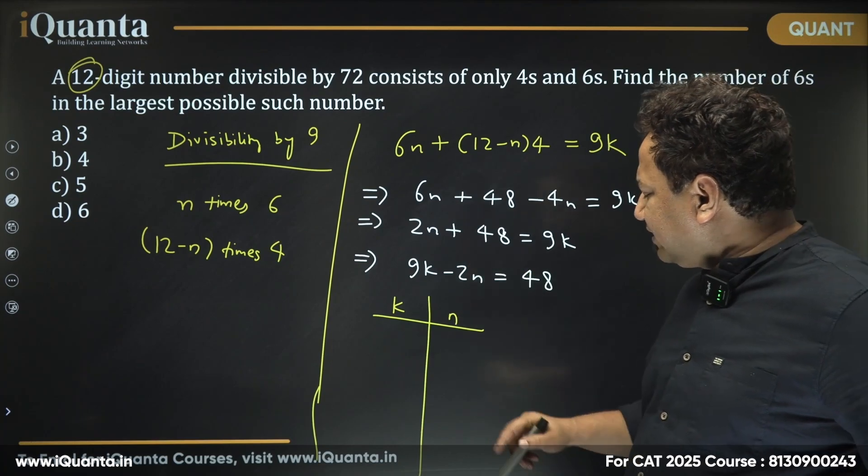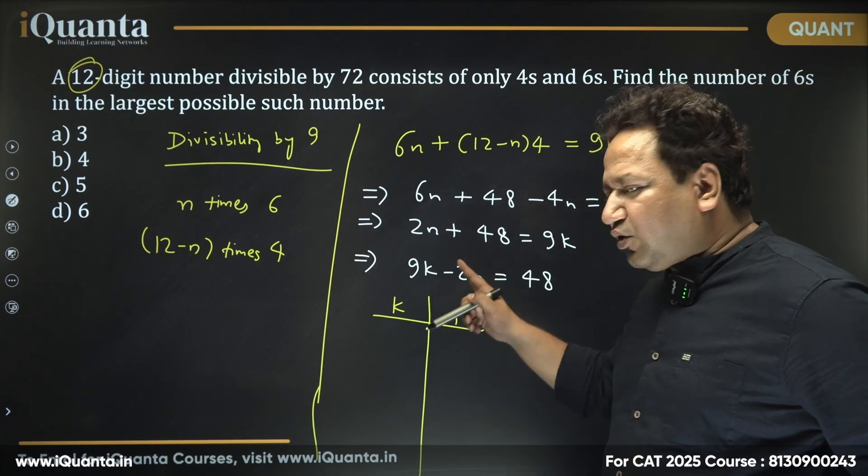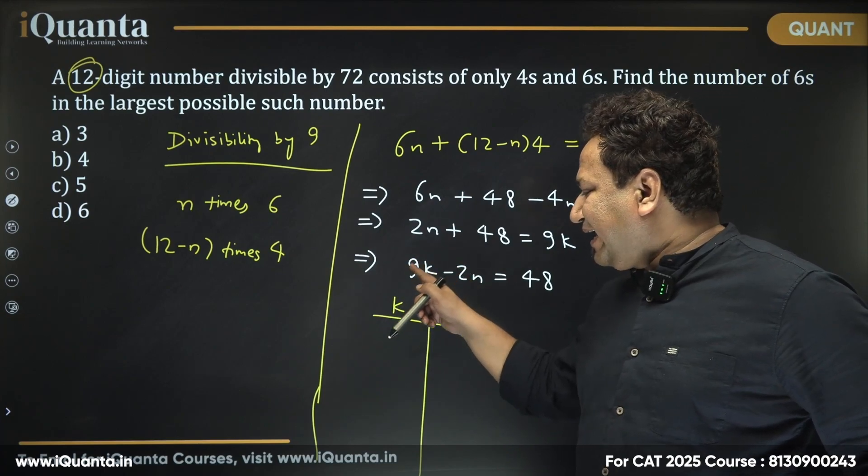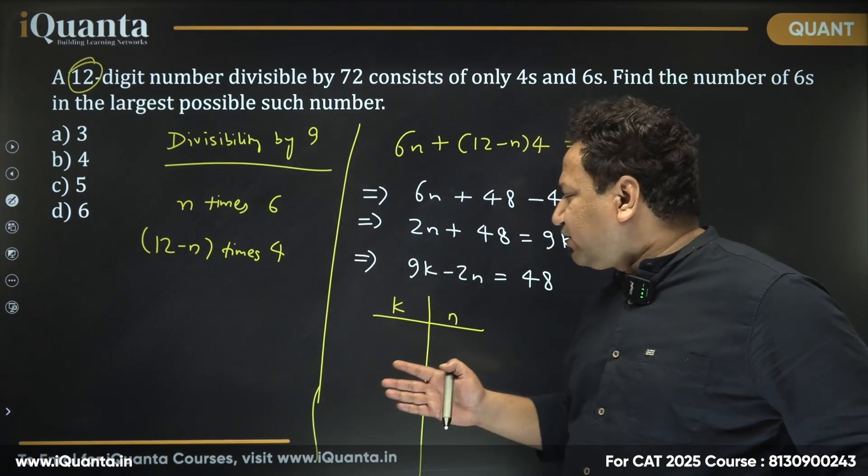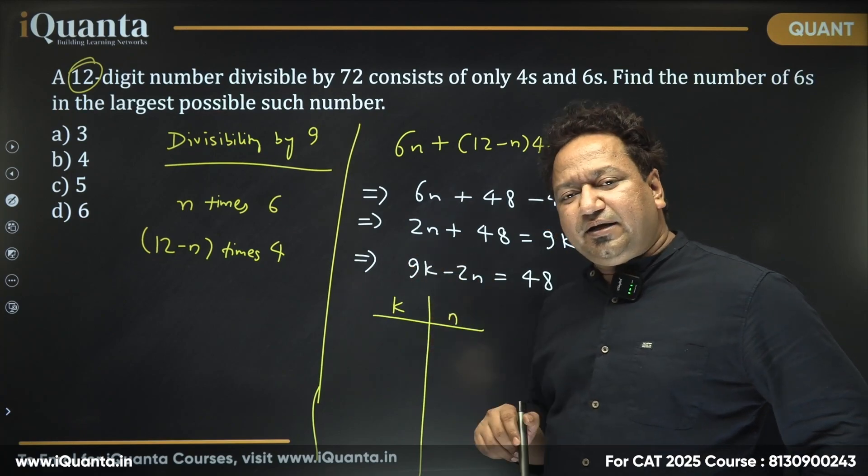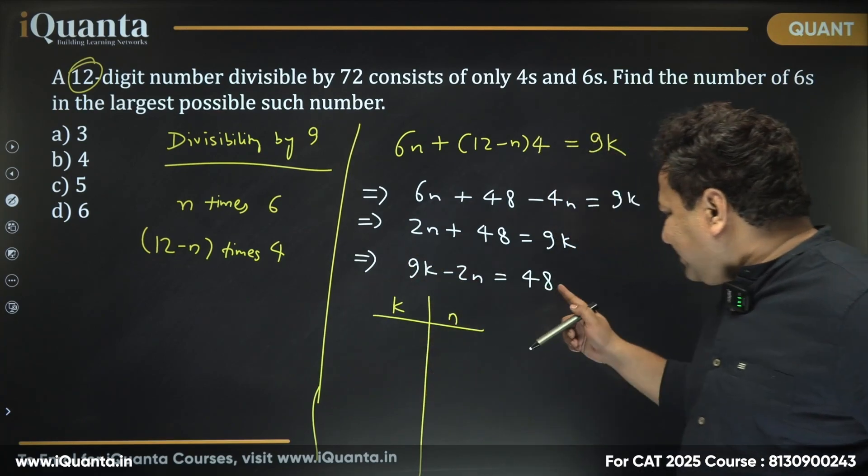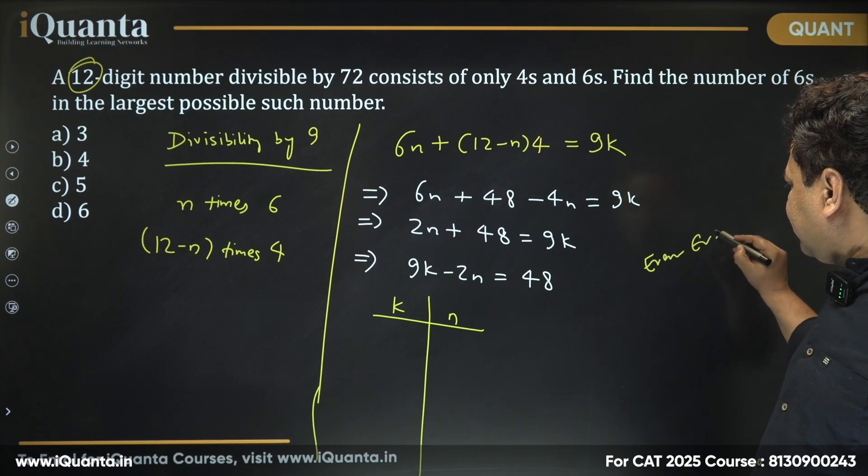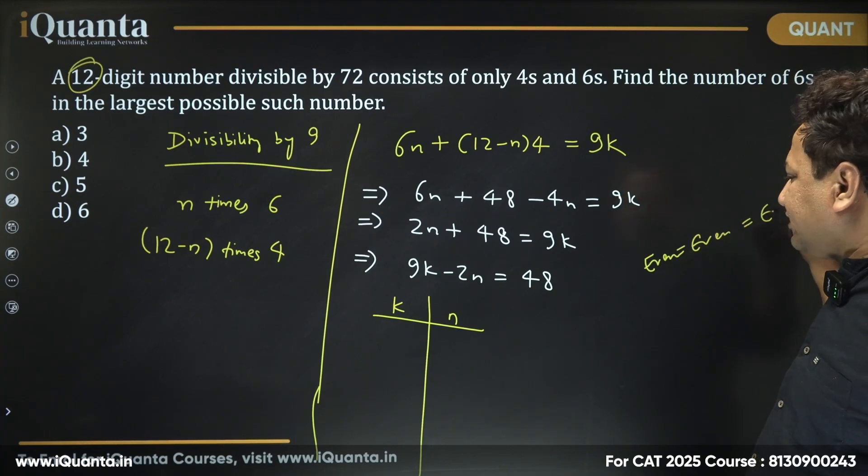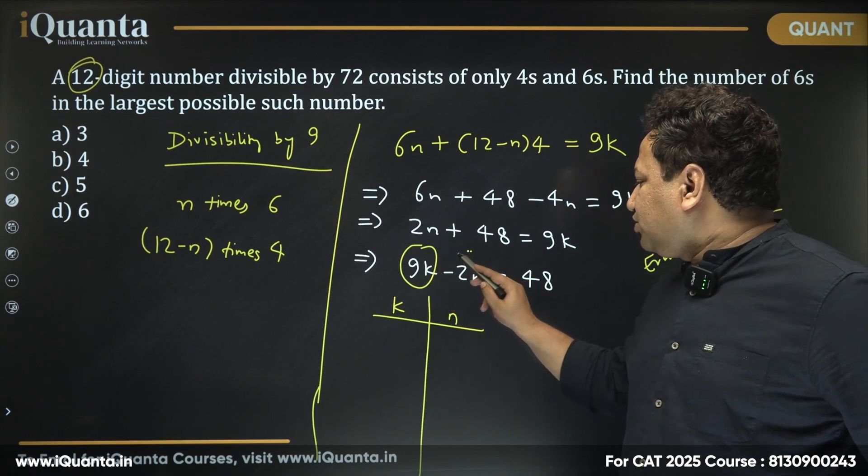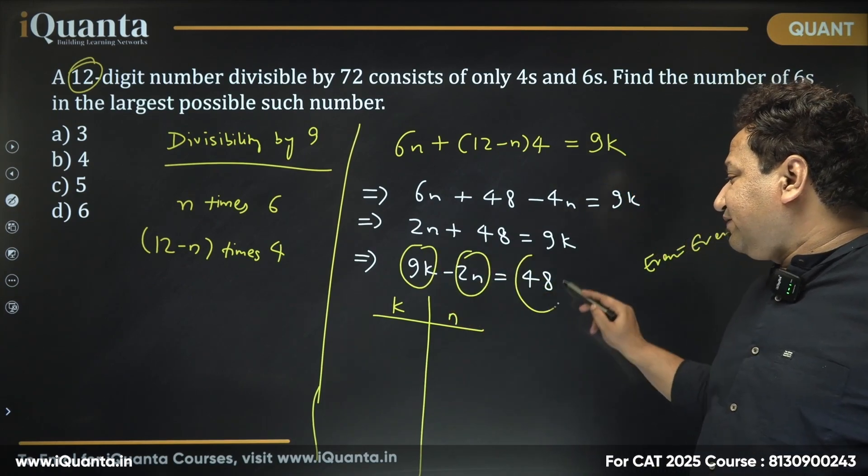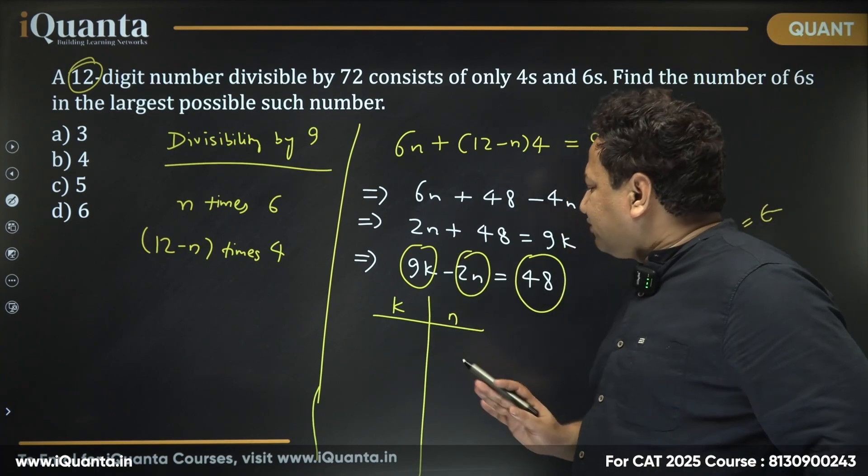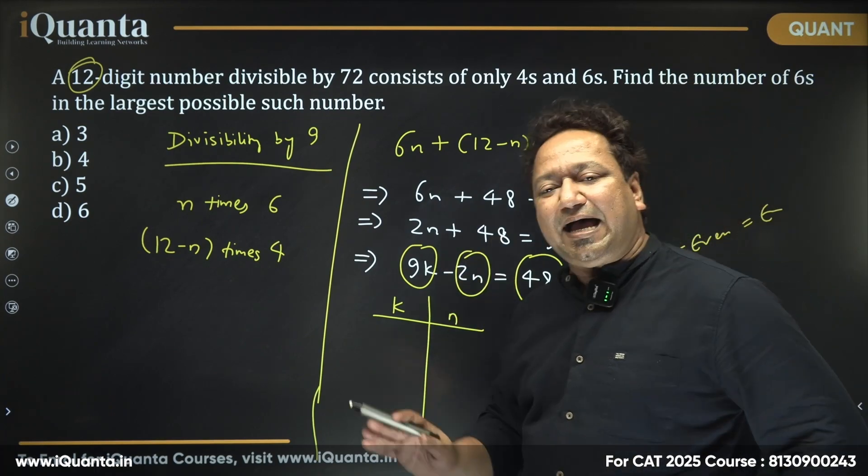So if I can see here, 9 is an odd number, 2 is an even number. This 2n will always be even. And this 9k will be odd or even depending on what the value of k is. And this 48 is also even. So even minus even gives you an even number, which means 9k as well as 2n must be even. 2n is always even. So the only possibility left over here is that k is an even number.